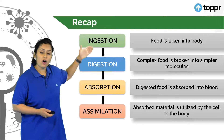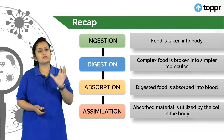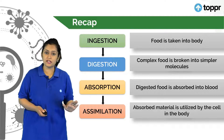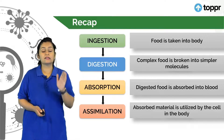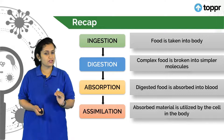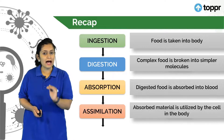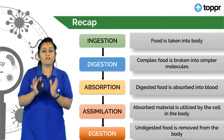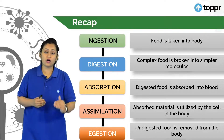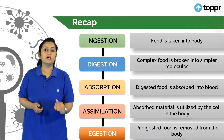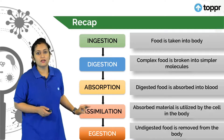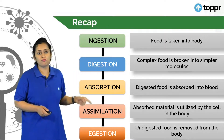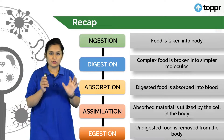After all these four steps, there are some food particles which are unwanted by our body — they are undigested — and such food particles have to be thrown out. That undigested food material which is removed from our body is called ejection. Here we complete all five steps of the process of nutrition in humans.